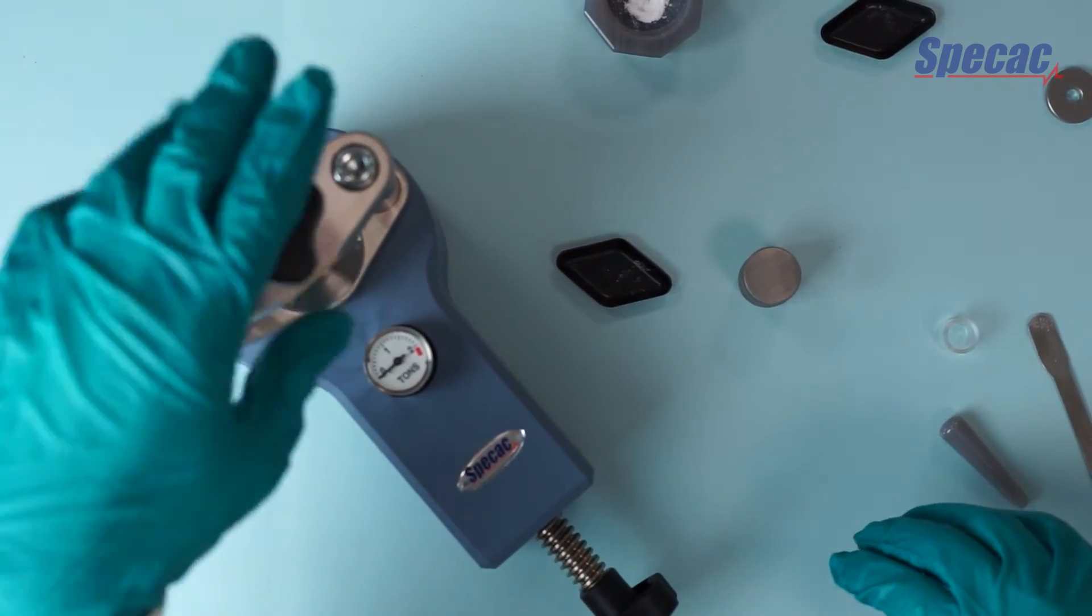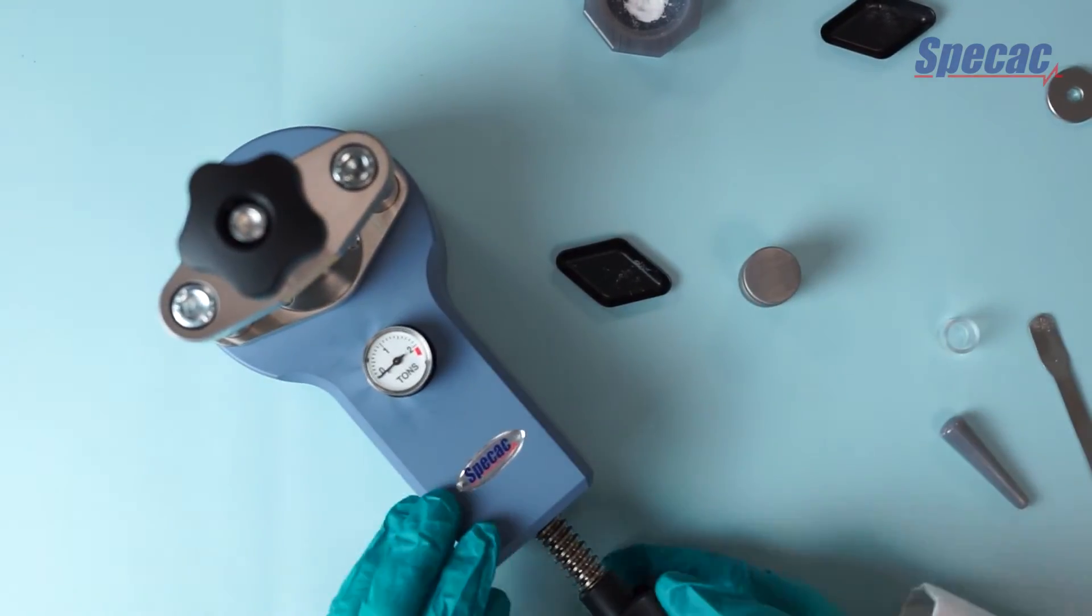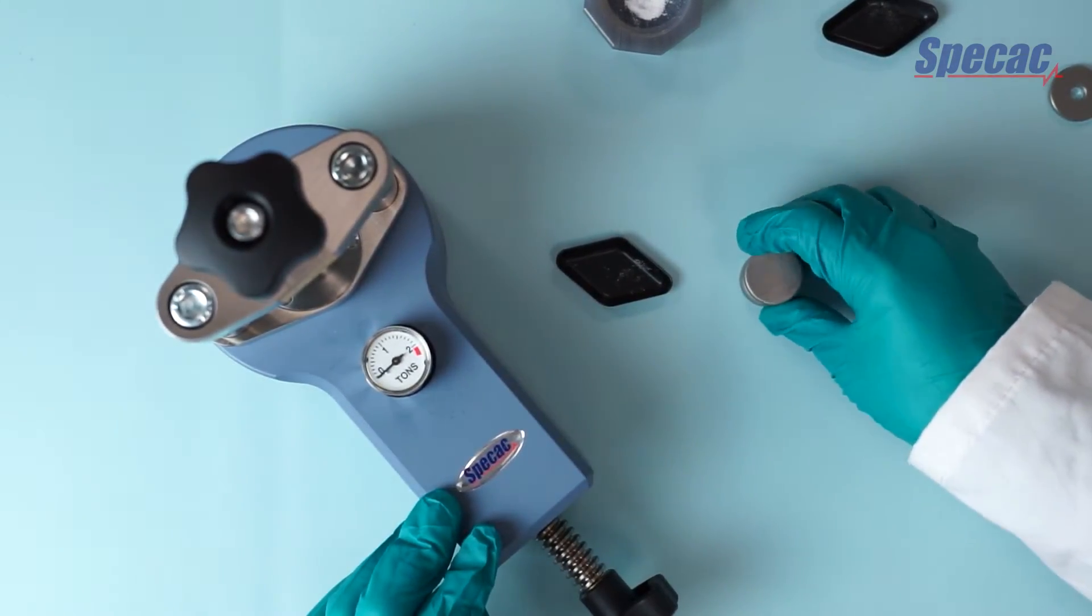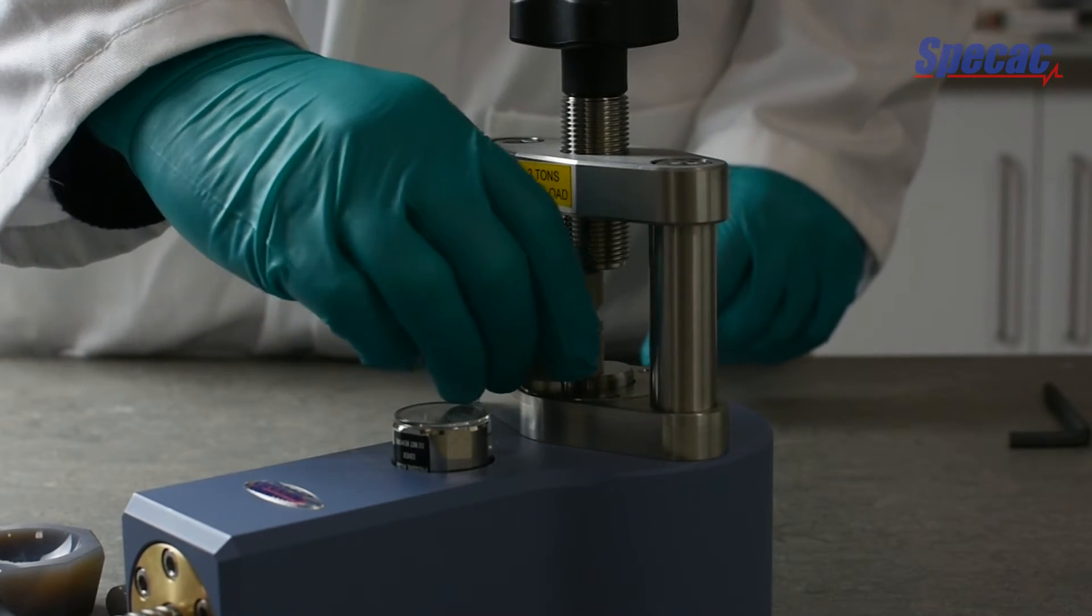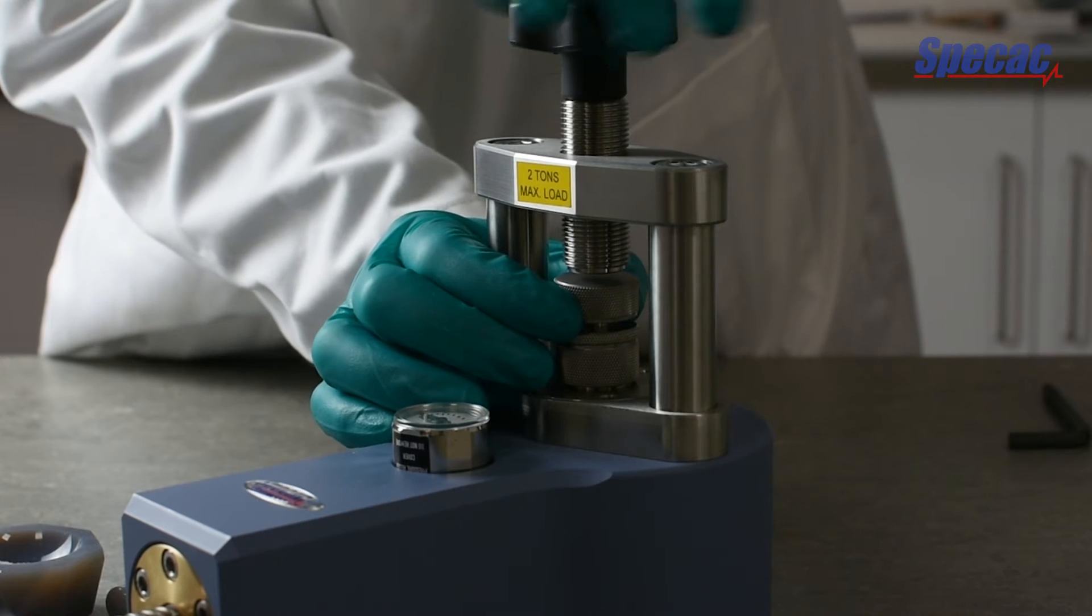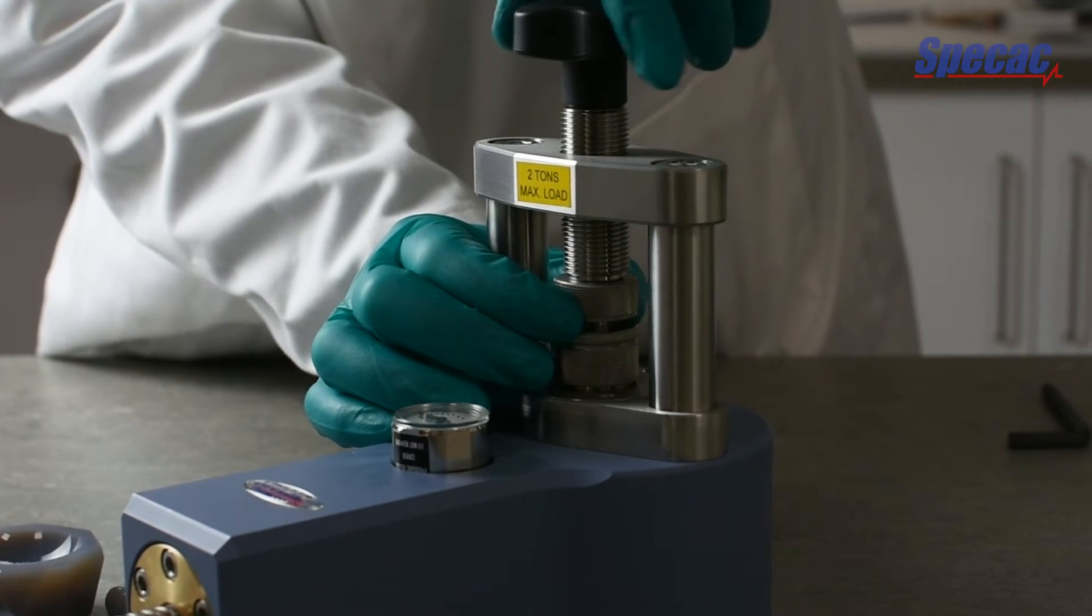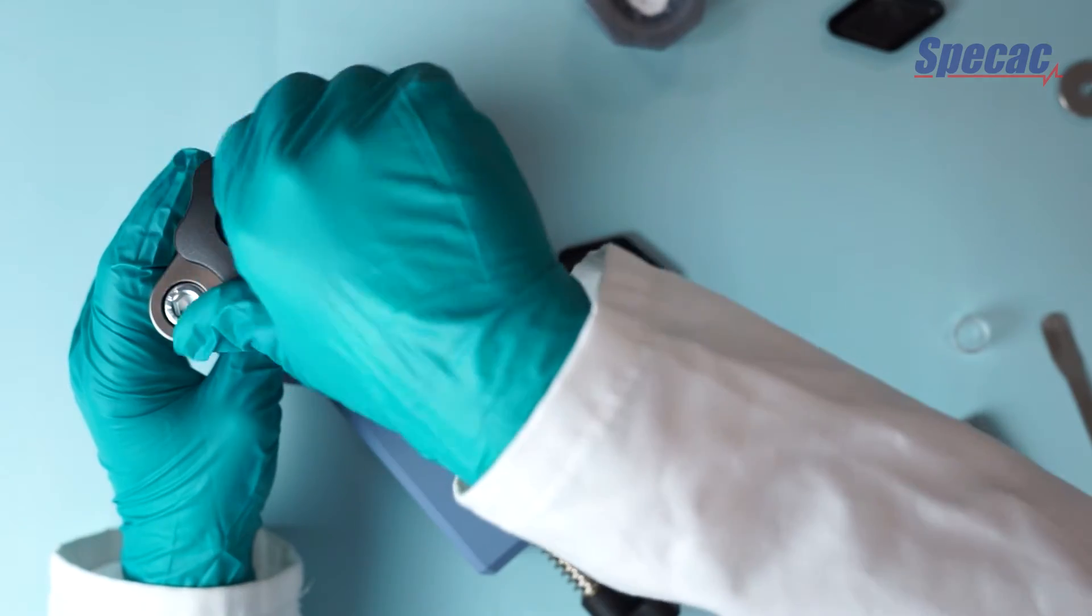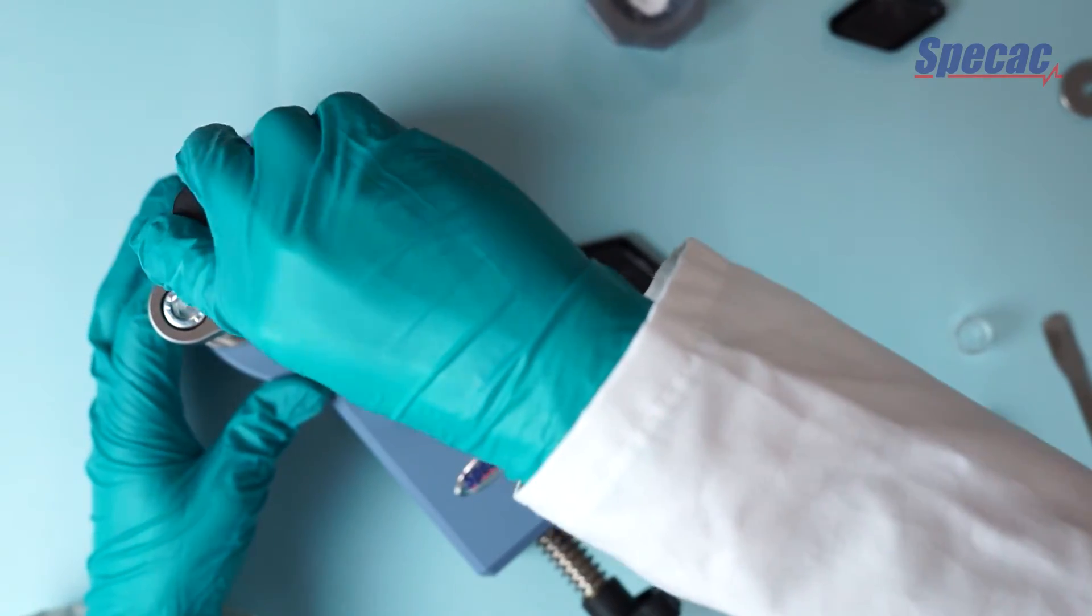Now we transfer everything to the press. We turn the lead screw counterclockwise to create space. Gently maneuver the pellet die into position. Tighten down the lead screw to hand tight.